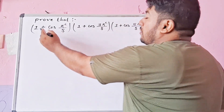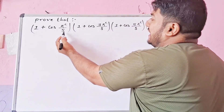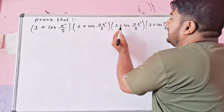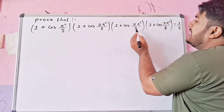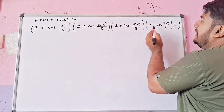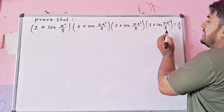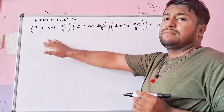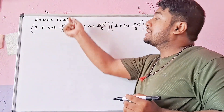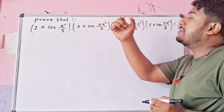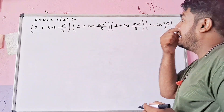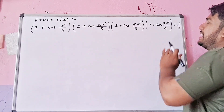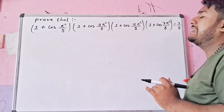Prove that (1 + cos π/8) into (1 + cos 3π/8) into (1 + cos 5π/8) into (1 + cos 7π/8) is equal to 1/8. The angles are π/8, 3π/8, 5π/8, and 7π/8.